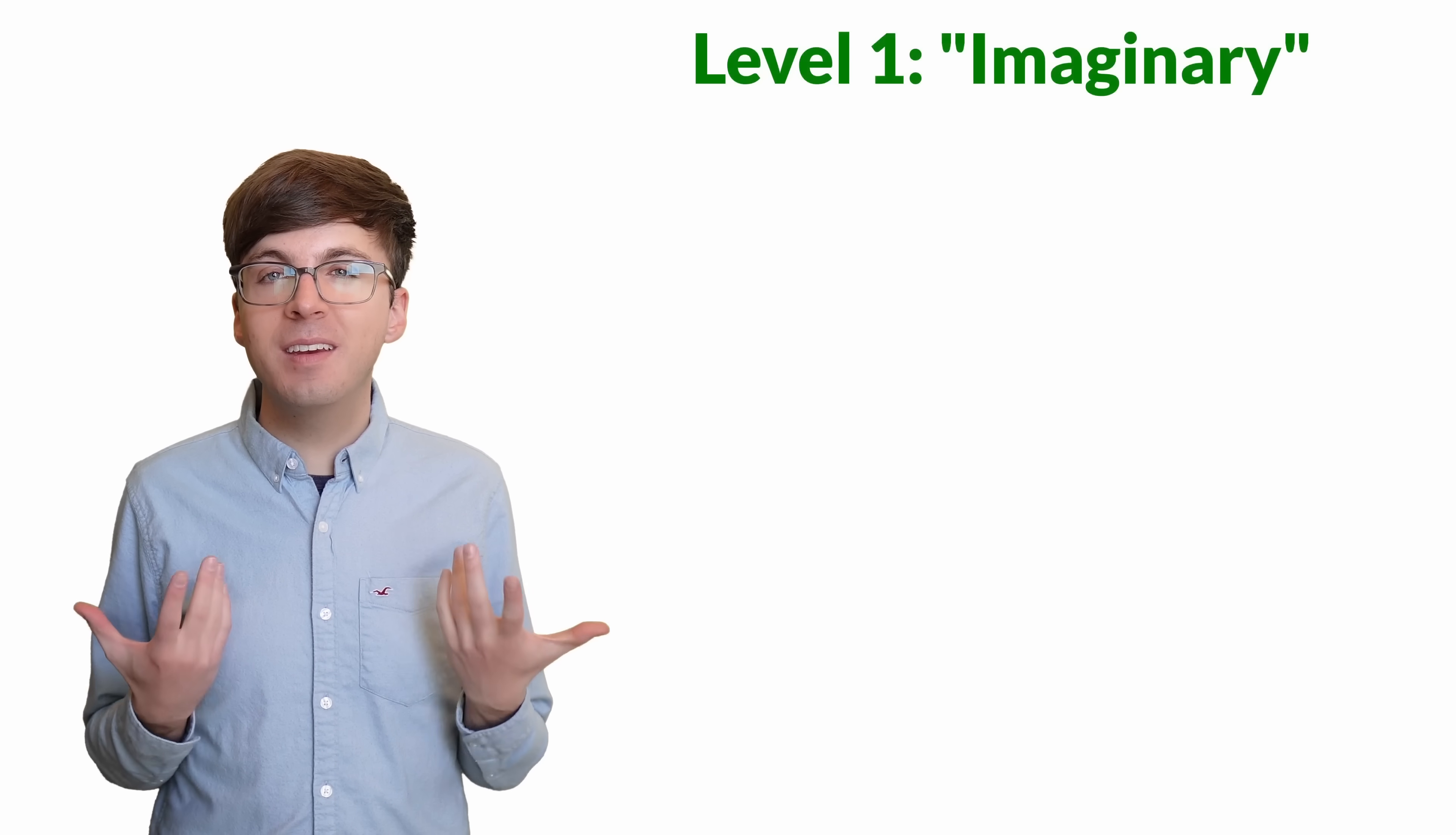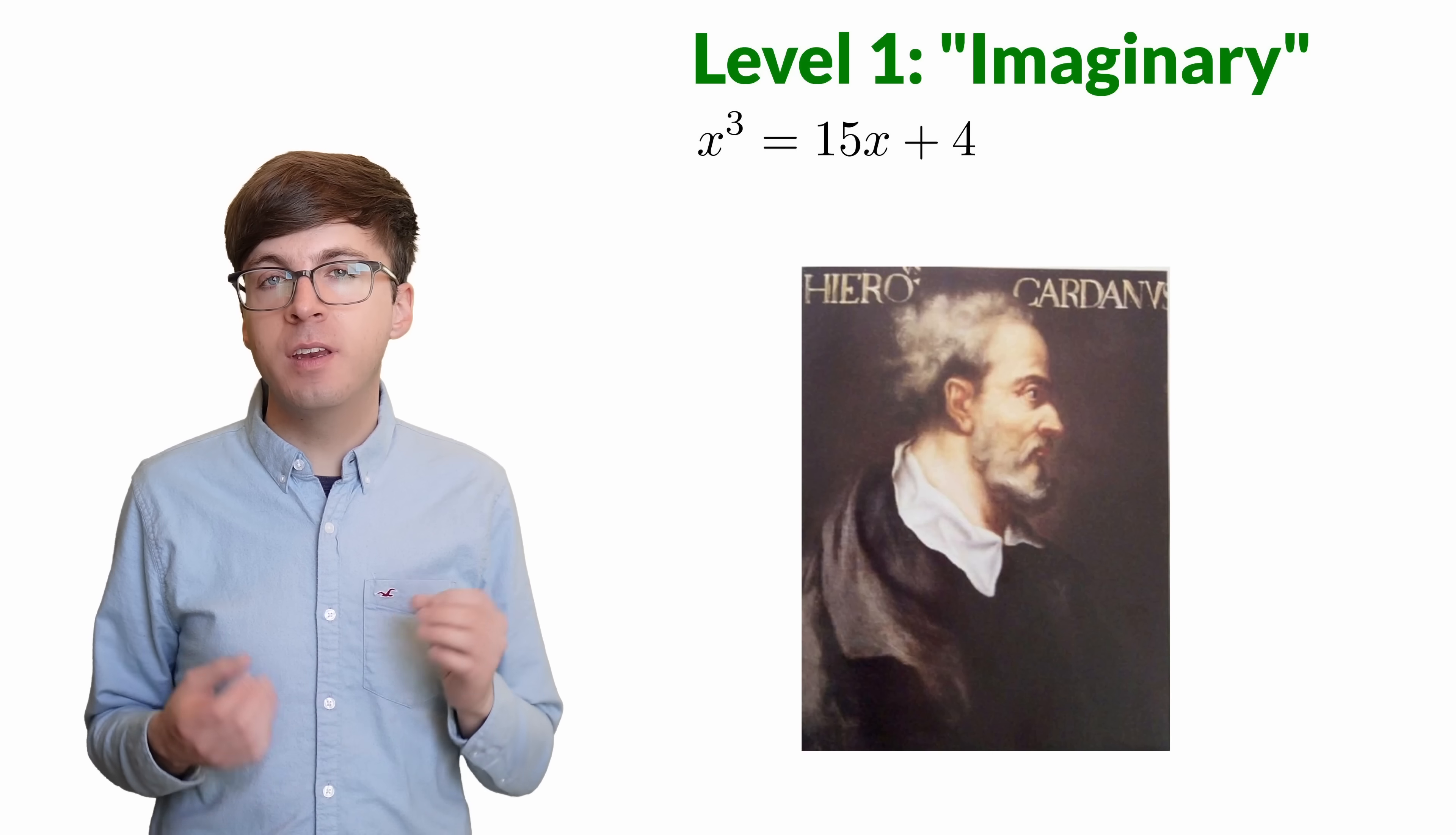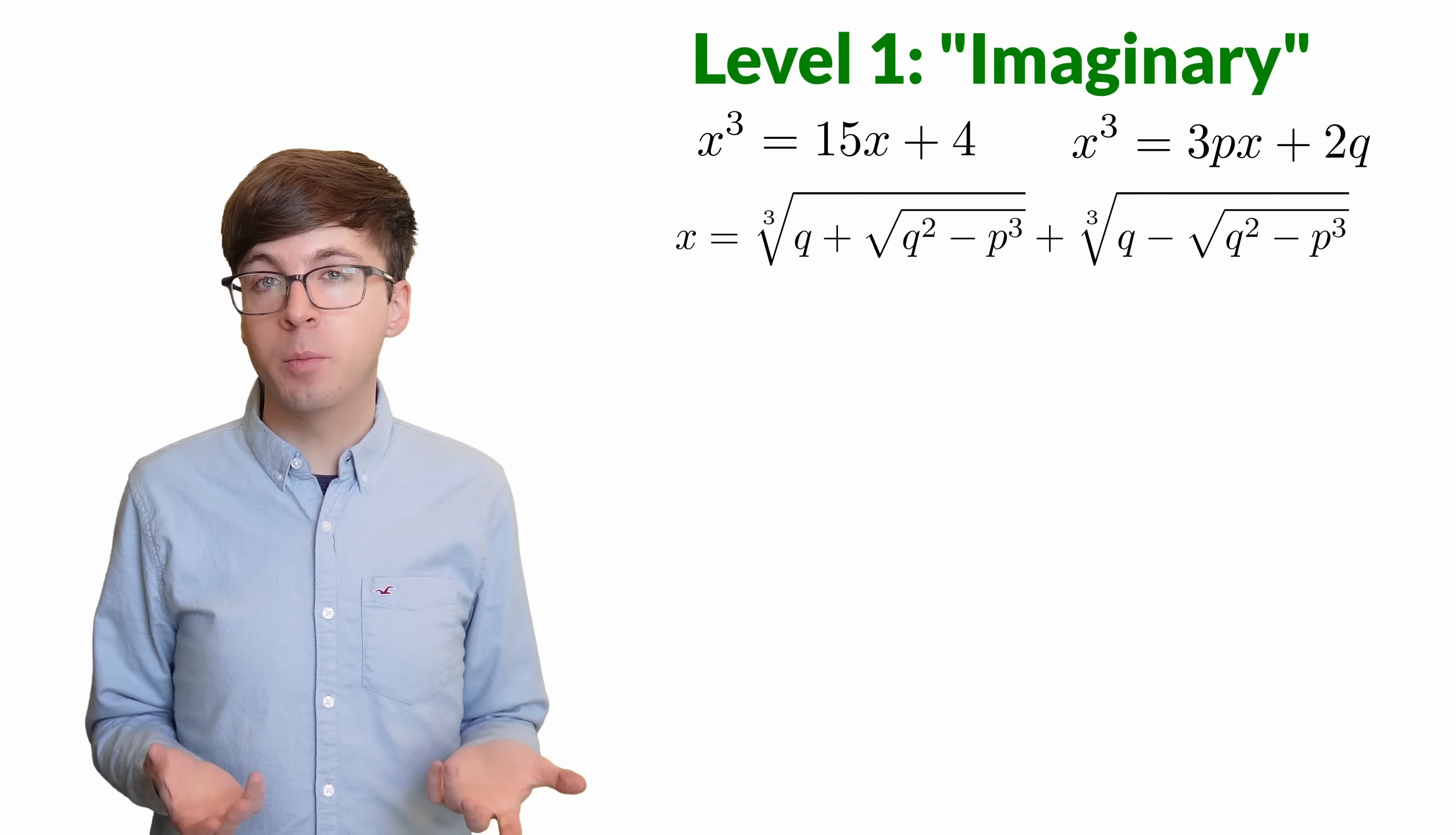For level one, let's get an idea of where the name imaginary came from. In the 1500s, Cardano wanted to solve cubic equations like x cubed equals 15x plus 4. He was only interested in real solutions since imaginary numbers weren't understood at the time. Cardano found a nice formula for depressed cubic equations like this one. It's depressed because it doesn't have an x squared term. Here is his formula.